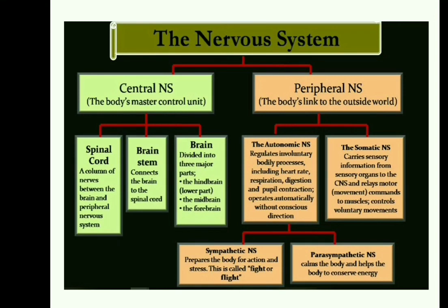Moving to another slide on the classification of the nervous system: anatomically, it is classified into the central nervous system, which consists of the spinal cord, brain stem, and brain. The brain stem consists of the medulla, pons, and midbrain. The brain consists of the diencephalon, cerebellum, and cerebrum. These topics will be studied further in the organization of the brain.